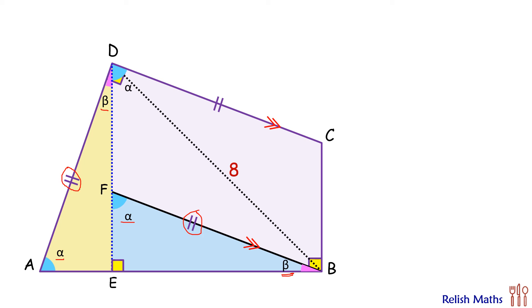So by ASA, triangle AED is congruent to triangle FEB. So as the triangles are congruent, thus the corresponding sides are equal, or we can say that ED is equal to EB. So what we have established is that the length DE is equal to length EB.